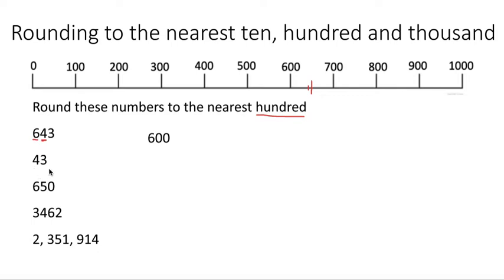We've got 43 here. The hundreds below it would be 0 and the hundreds above it would be 100, because it hasn't actually reached any hundreds yet. We look between 0 and 100 — our cutoff point would be 50. 50 would be rounded up, but we're on 43 so we round down to 0. Then we've got 650. We're going to be between 600 and 700 again. This number is 650 — it almost feels exactly in the middle, but the rule is if it is 50 and above it needs to be rounded up. So we would round it up to the next hundred, which is 700.